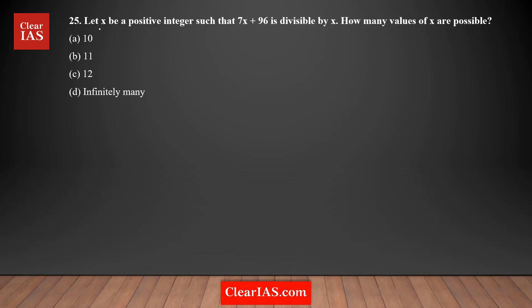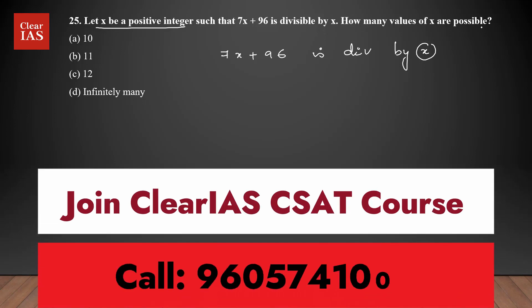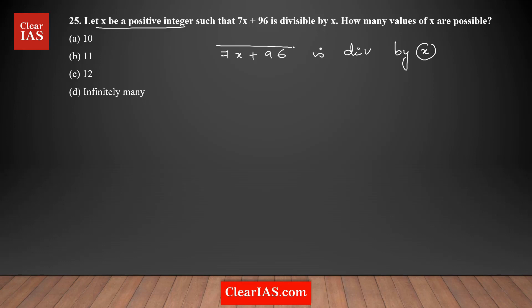Let's analyze this question: x is a positive integer such that 7x + 96 is divisible by x. I need to find how many positive values of x are possible. When 7x + 96 is divisible by x, dividing it by x gives a remainder of zero — it is exactly divisible. Before solving, let's discuss a few properties of remainders.